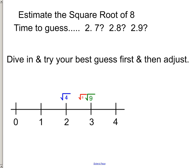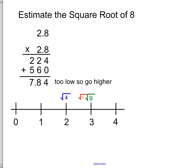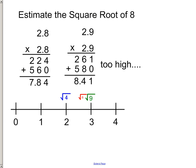So, now we start guessing. Is it 2.7? Is it 2.8? You notice I didn't fill it all the way in. So, you dive in and you try your best guess, and then you adjust. So, I tried 2.8. That's a little low. 2.8 times 2.8 is 7.84. So, I'm going to try 2.9. It's a little too high. So, it's somewhere in the middle.